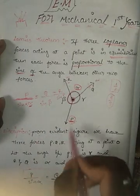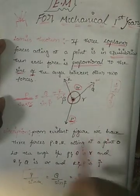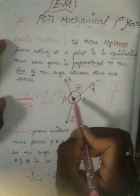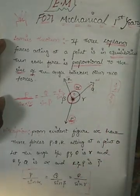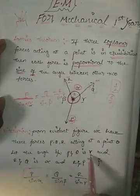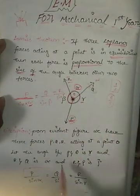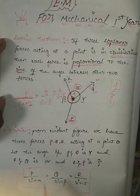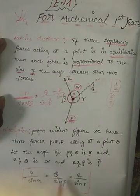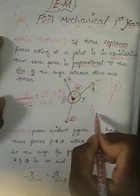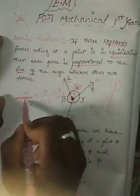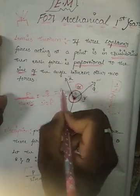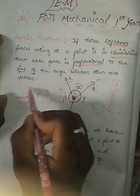From the figure, we have three forces P, Q, R acting at a point O. The angle between P and Q is alpha, the angle between R and Q is alpha, and the angle between R and P is beta. From this, the relation P/sin α = Q/sin β = R/sin γ is derived.